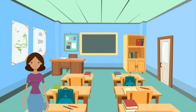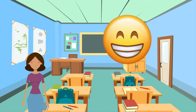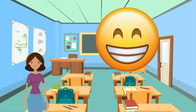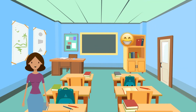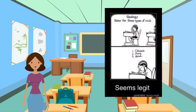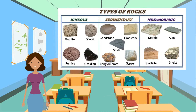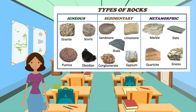In today's lesson we are going to be looking at the types of rocks. This topic really rocks — you can take that for granted! But seriously, rocks can be divided into three main groups: igneous, sedimentary, and metamorphic.